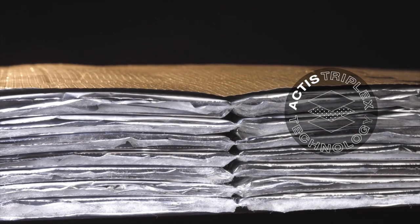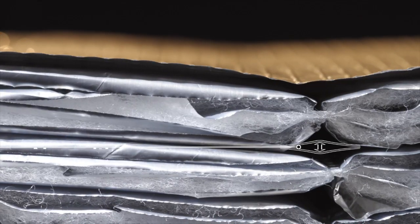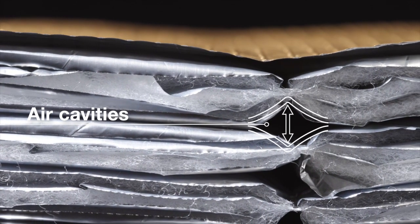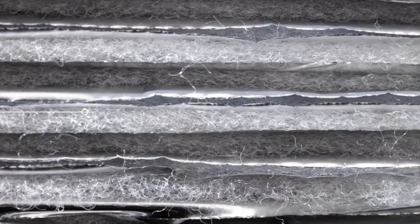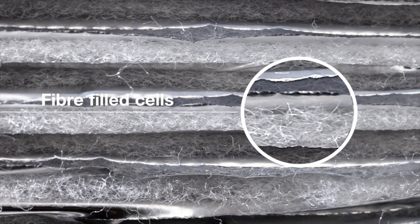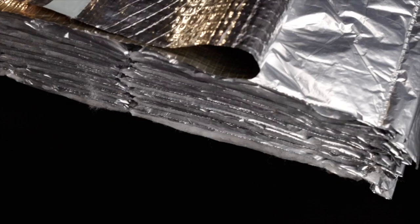Utilising new triplex technology developed by Actis, this unique structure of oval-shaped air cavities and fibre-filled cells between layers of reflective films maximises the amount of trapped air.